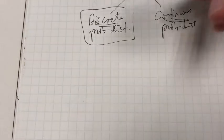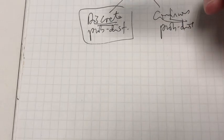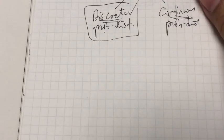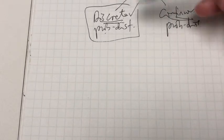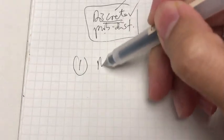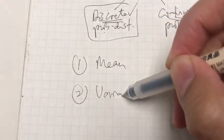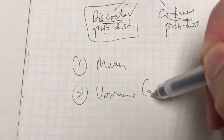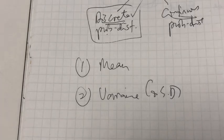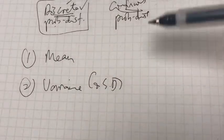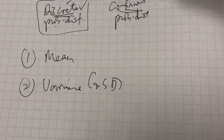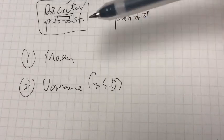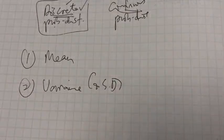In this video, we're only going to be focusing on discrete probability distribution. A discrete probability distribution is basically a probability distribution based on discrete random variables. What's important here is, one, we need to know the mean or average or expected value of this distribution. Secondly, we want to know the variance. And once you know the variance, you can also find the standard deviation. The formulas are all written in the textbook.